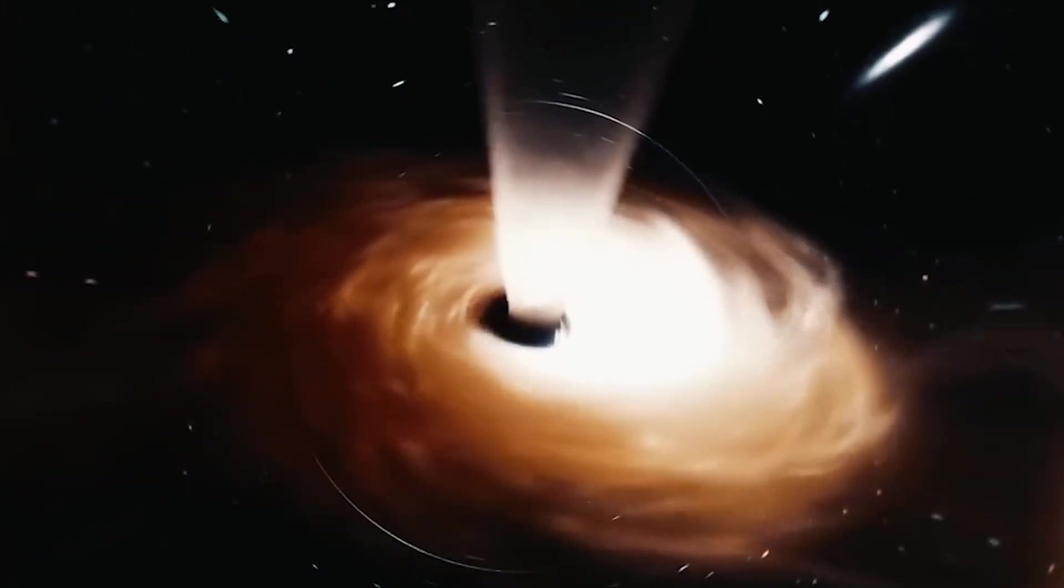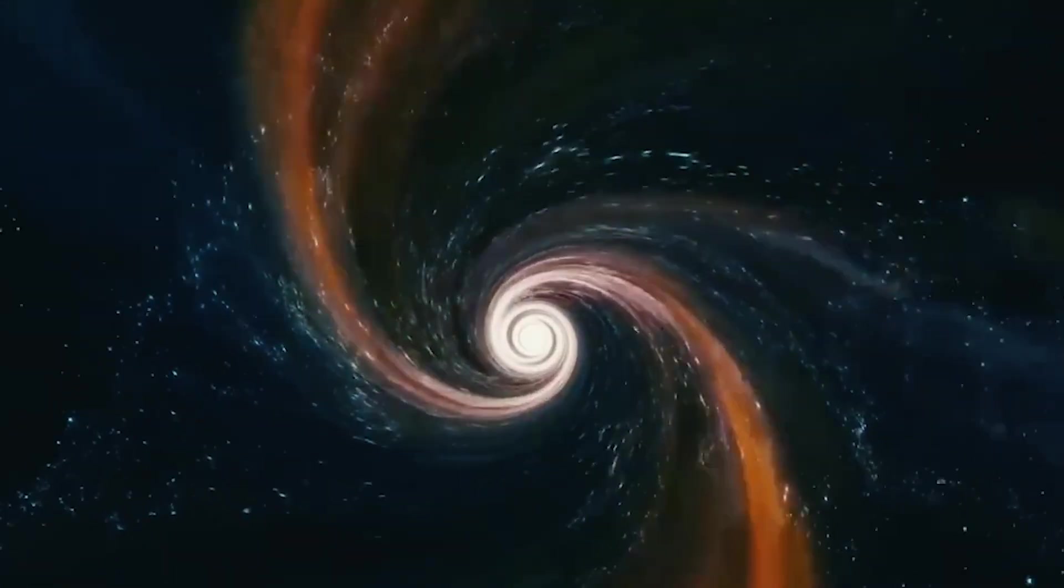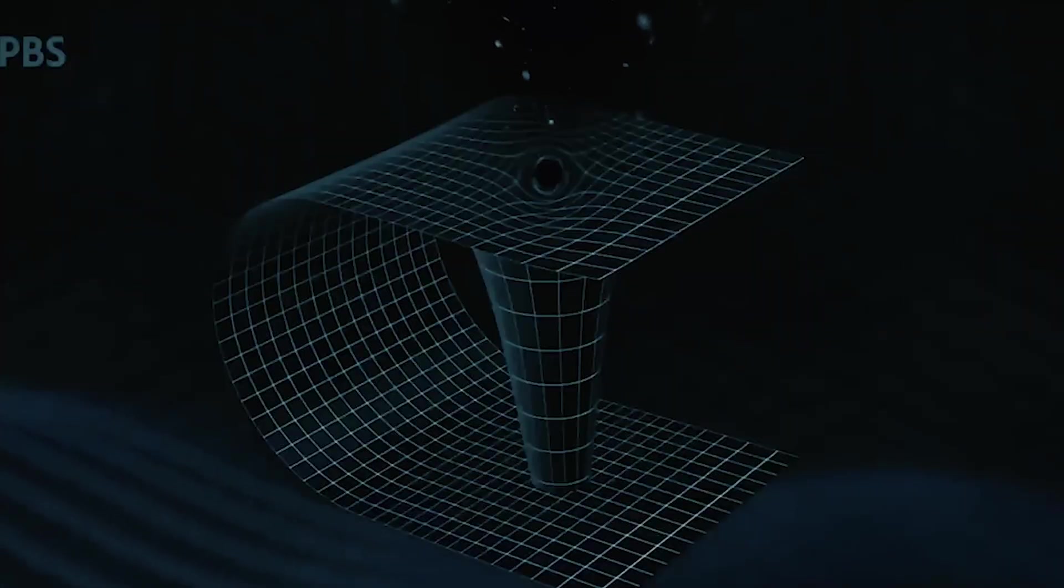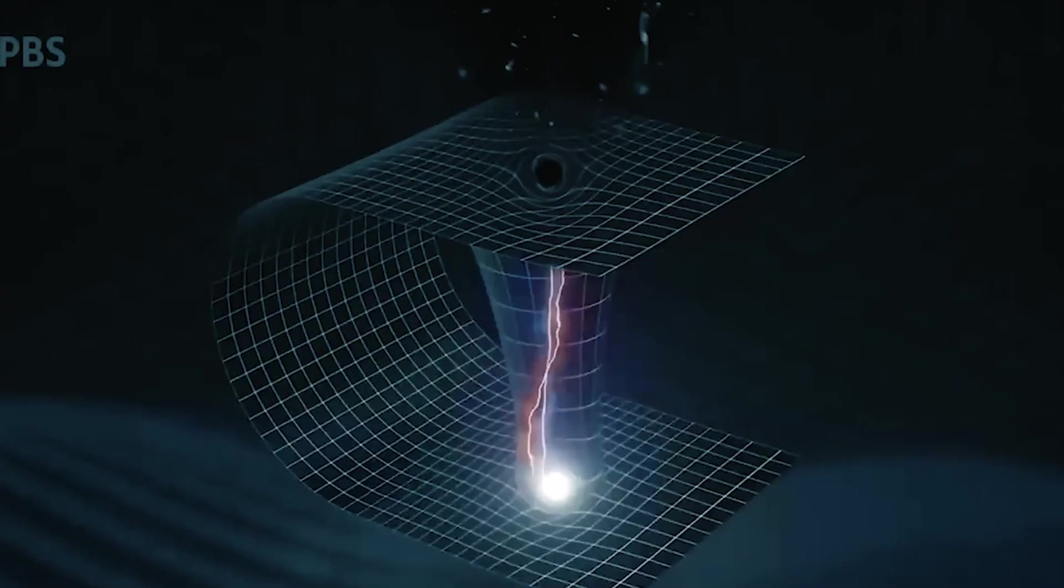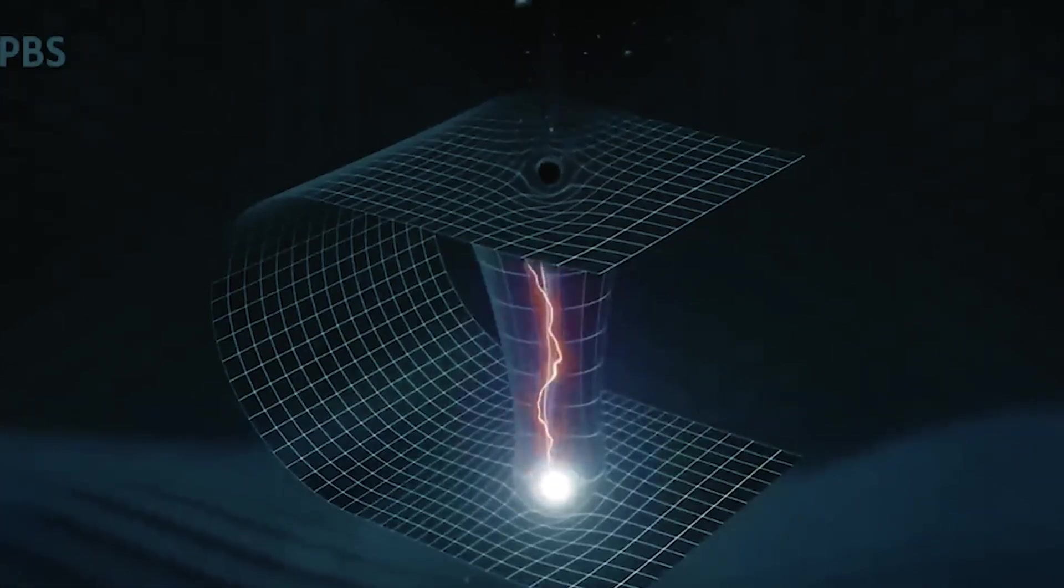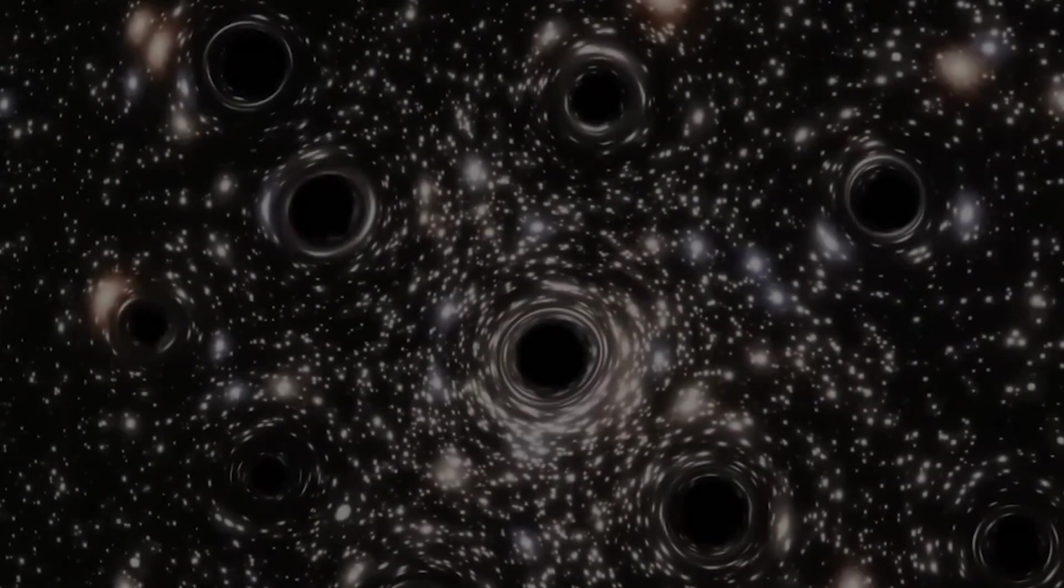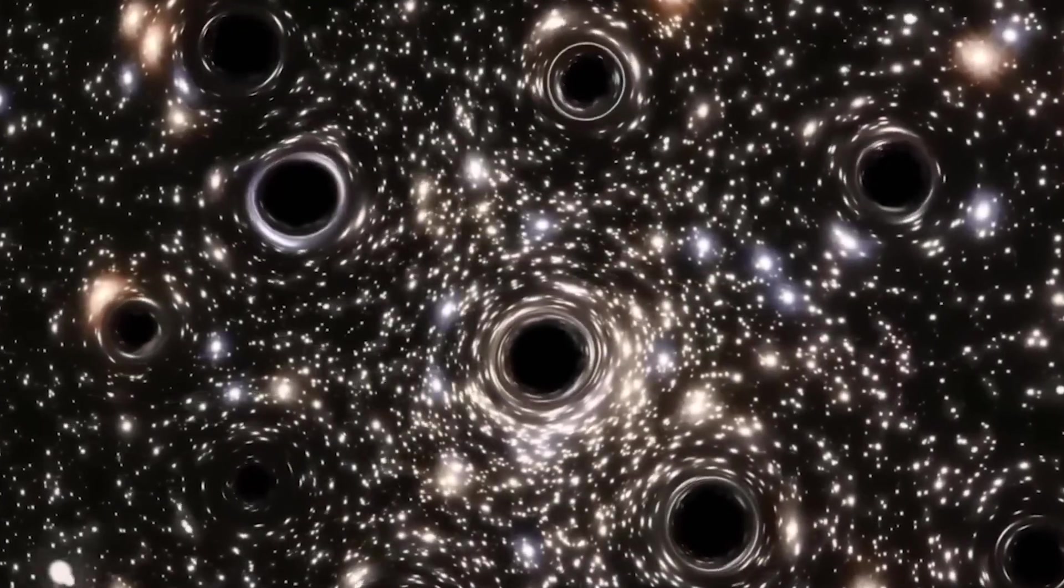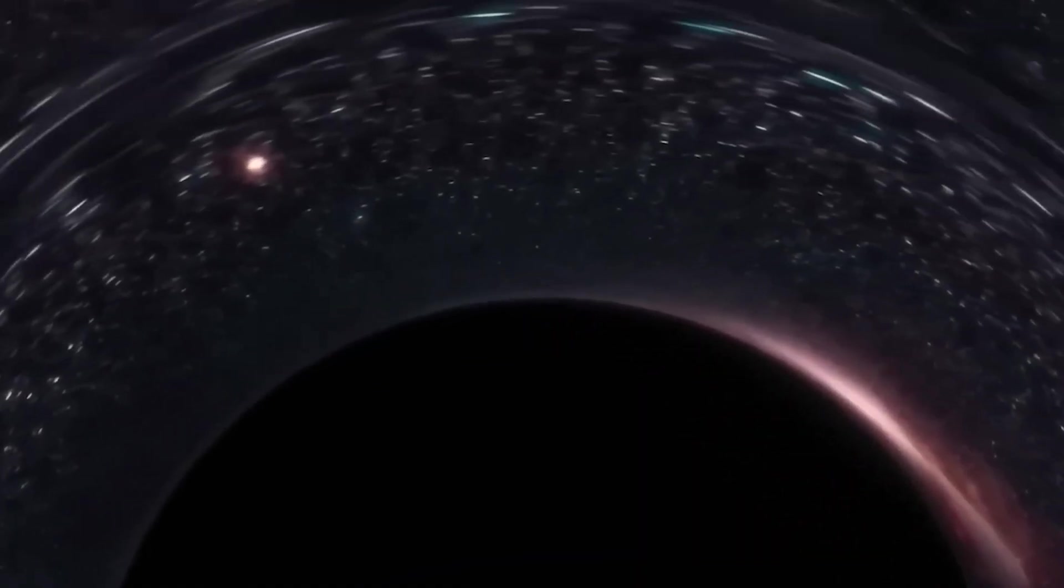This interpretation leads to another astonishing thought. Every black hole we observe could harbor a fresh universe of its own. And perhaps the reason the laws of physics seem so well-tuned for complexity, life included, is that black holes producing stable offspring universes endure and multiply, creating a vast cosmic family tree.